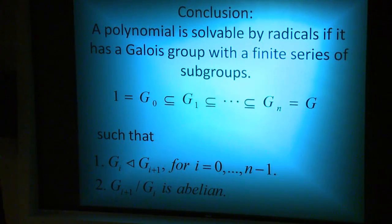Conclusion: A polynomial is solvable by radicals if it has a Galois group with a composition series containing quotient groups that are abelian.